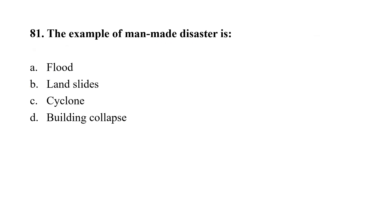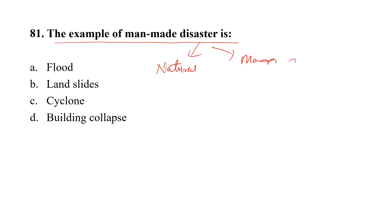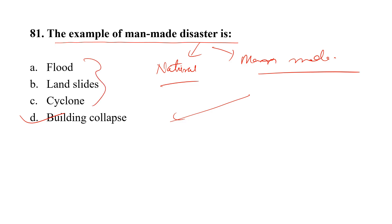Question number 81. The example of a man-made disaster is: Option A, flood; Option B, landslide; Option C, cyclone; Option D, building collapse. Disaster is divided into natural and man-made. The correct option is D — building collapse is a man-made disaster, whereas flood, landslide, and cyclone are natural disasters.